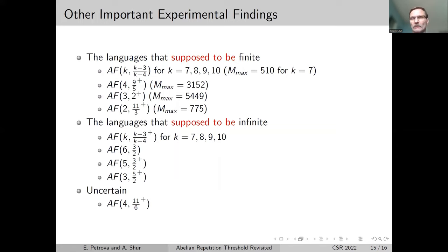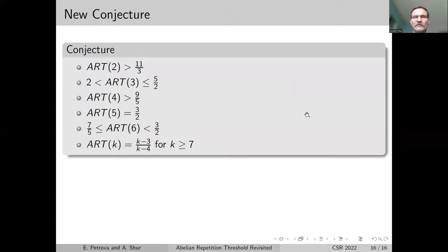We also study some other languages, get some important findings, and classify some languages as probably finite or probably infinite depending on the behavior of the random walks. Finally, we finish with this conjecture. The only case from the earlier conjecture is this one, which remains the same. For all other cases, we shifted this lower bound up. The general case we suppose now is as follows: instead of (k-2)/(k-3), we have this.